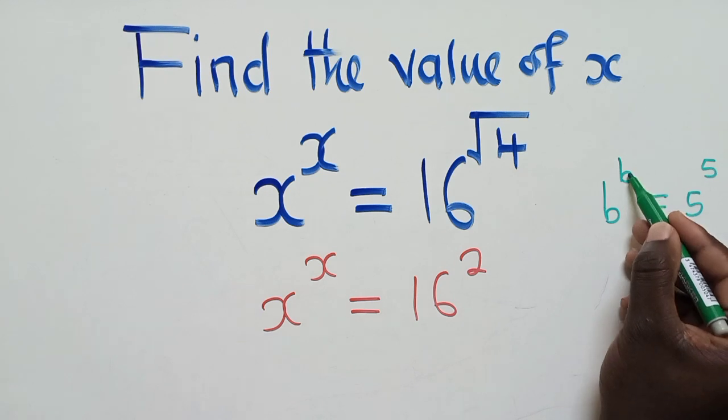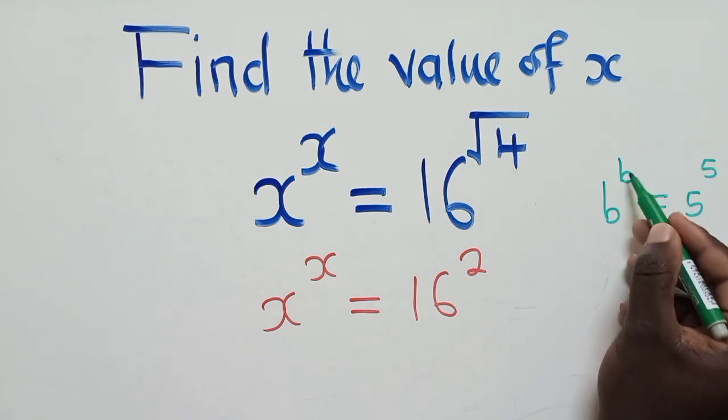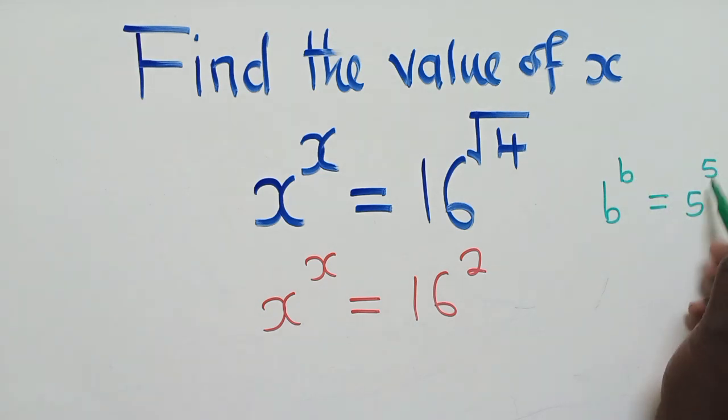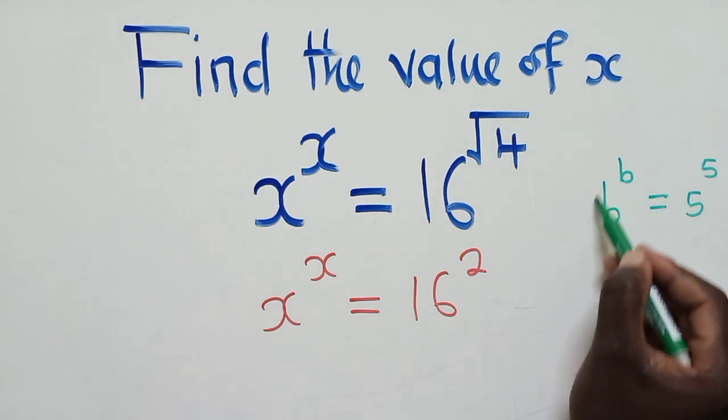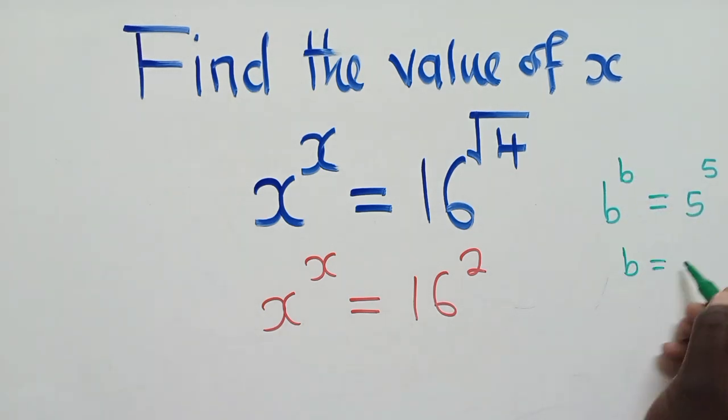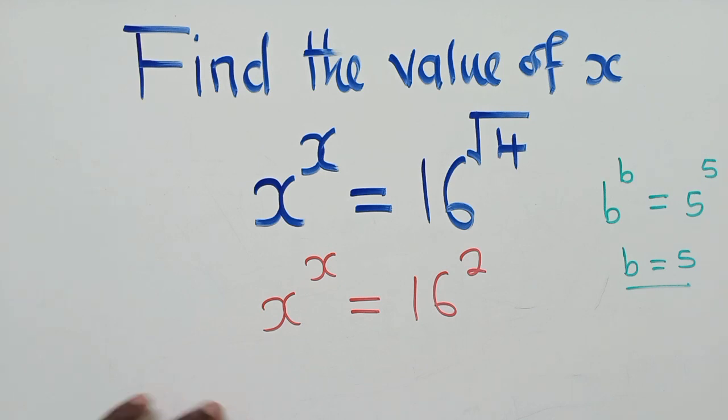The power, the base—the power and the base here. If on this side we've got the base equal to the power, meaning this is equal to this, so we're going to say b is equal to 5. This is the idea that we need right here.